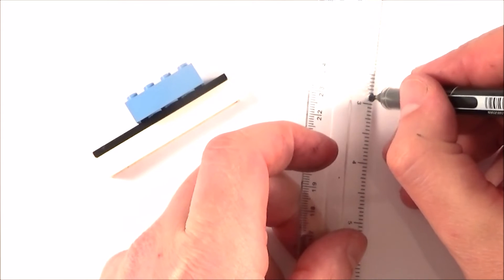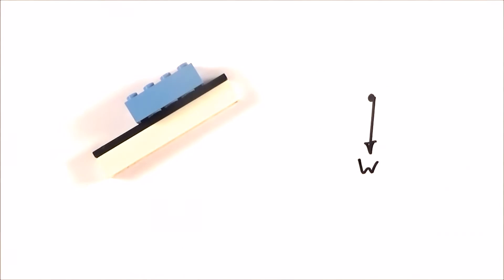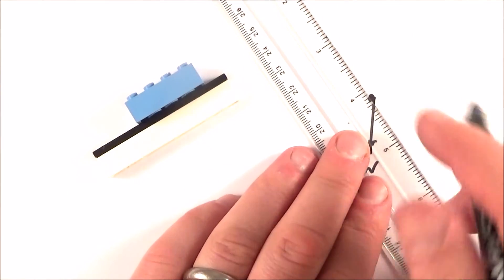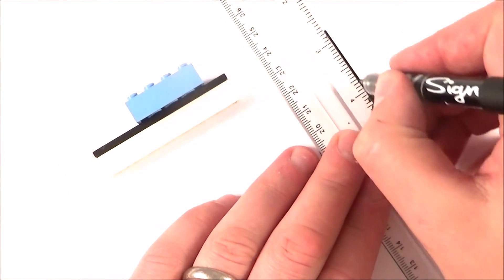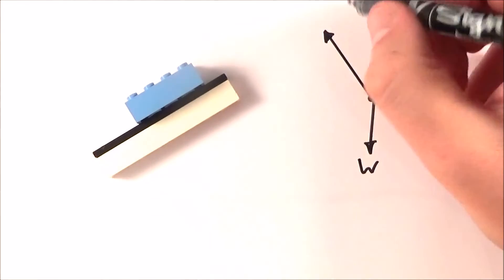We've got certain forces acting on it. Again, we have the weight always acting down, so here's my weight W. What other forces act on it? Well, there's going to be a normal contact force, and this is going to be at 90 degrees to the surface. So if I put that in at an angle a bit like this, this is my normal contact force.